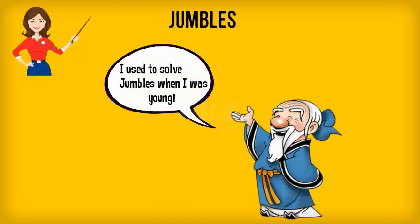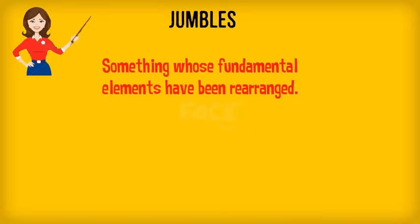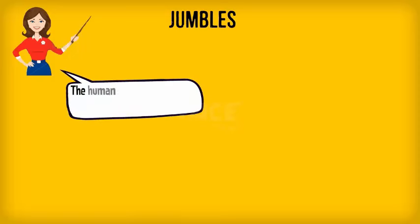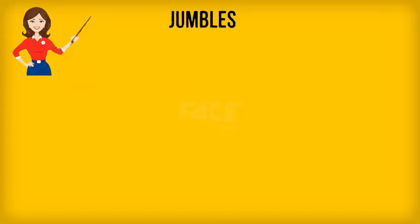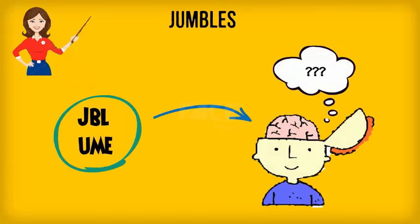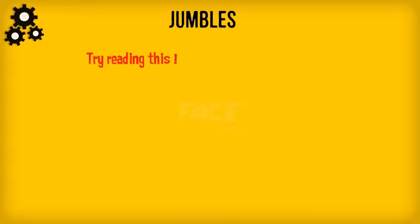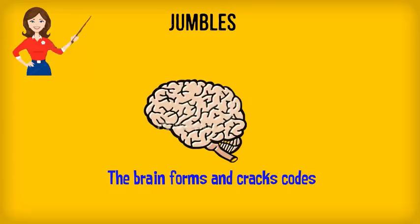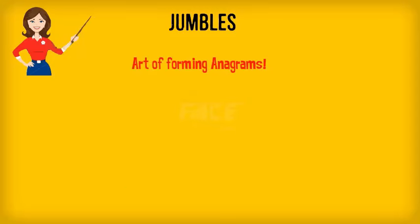Jumbles have been around for longer than anyone can imagine. A jumble basically means something whose fundamental elements have been rearranged. The human brain has an amazing cognitive ability to process garbled nonsense, and this is precisely why we will be able to understand entire sentences even if the words or the letters are out of place. This power of the brain to form and crack codes has been used extensively throughout history. Thus was born the art of forming anagrams, which are basically words containing jumbled letters.